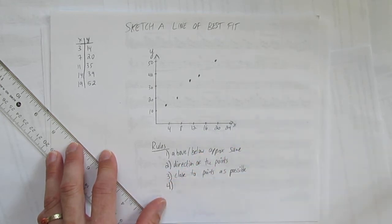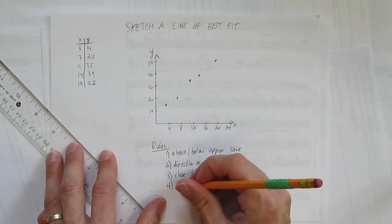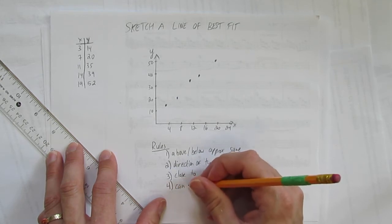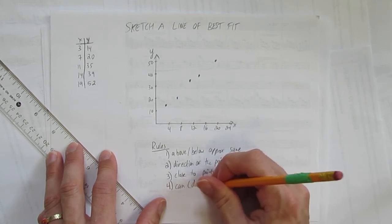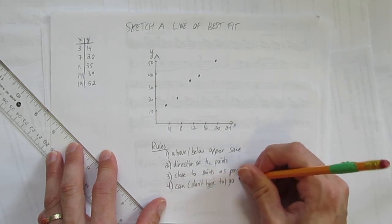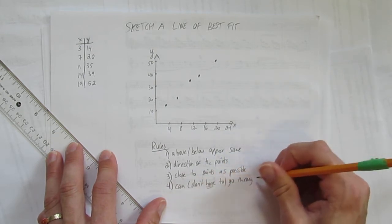And the line of best fit has one more rule, which is you can, but you don't have to, go through points.